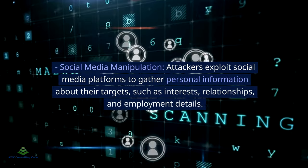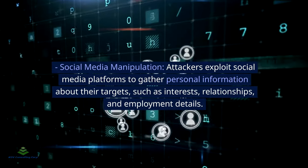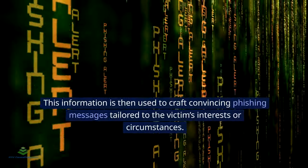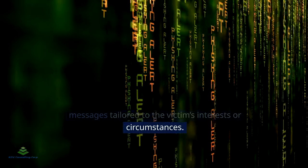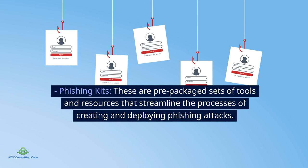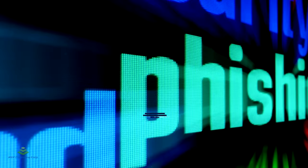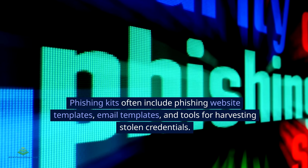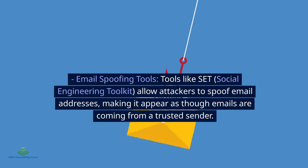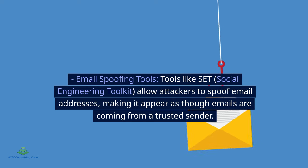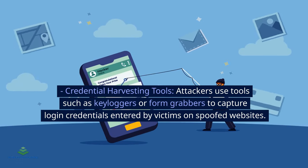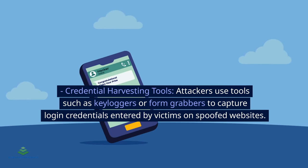Social media manipulation involves attackers exploiting social media platforms to gather personal information about their targets, such as interests, relationships, and employment details, which is then used to craft convincing phishing messages. Common tools include phishing kits — prepackaged sets of tools and resources that streamline creating and deploying phishing attacks, including website templates, email templates, and credential harvesting tools. Email spoofing tools like SET (Social Engineering Toolkit) allow attackers to spoof email addresses, making emails appear to come from a trusted sender. Credential harvesting tools such as keyloggers or form grabbers capture login credentials entered by victims on spoofed websites.